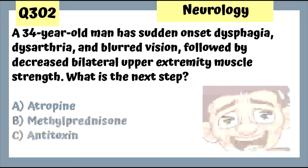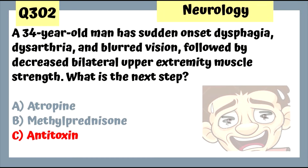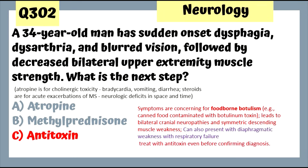Question 302: A 34-year-old man has sudden onset dysphagia, dysarthria, and blurred vision followed by decreased bilateral lower extremity muscle strength. Next step is to give antitoxin — this is foodborne botulism with descending paralysis. Patients can also present with diphasic weakness with respiratory failure. Treat with antitoxin even before confirming the diagnosis.